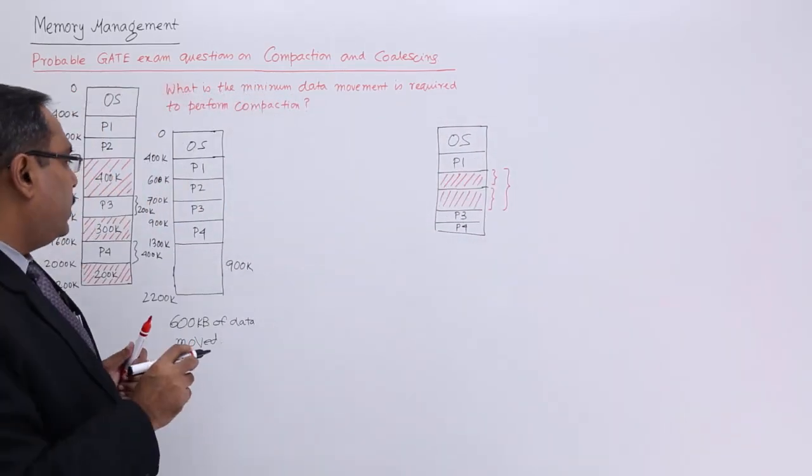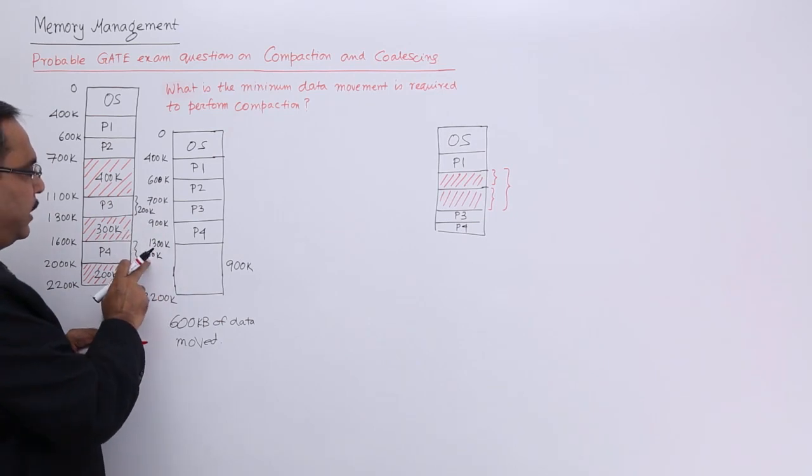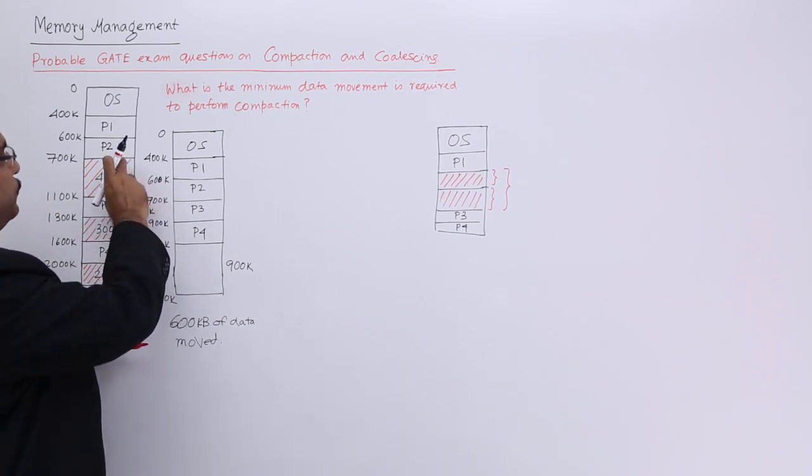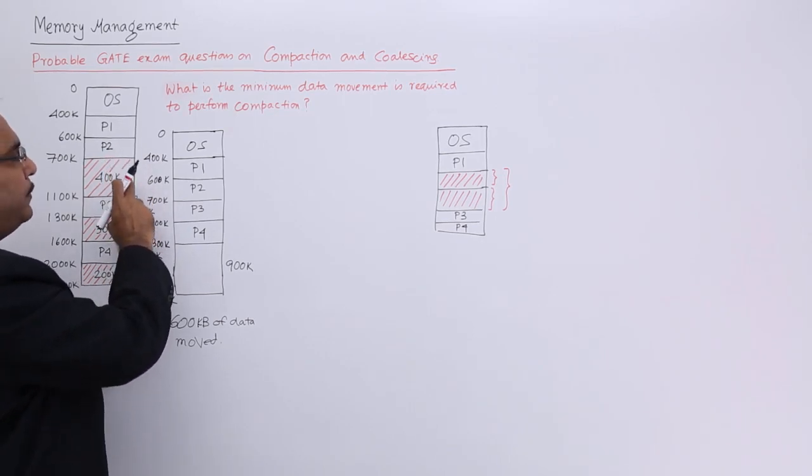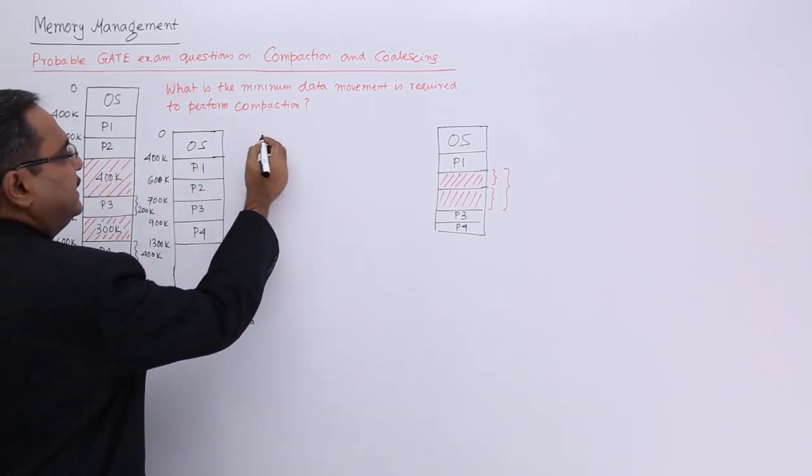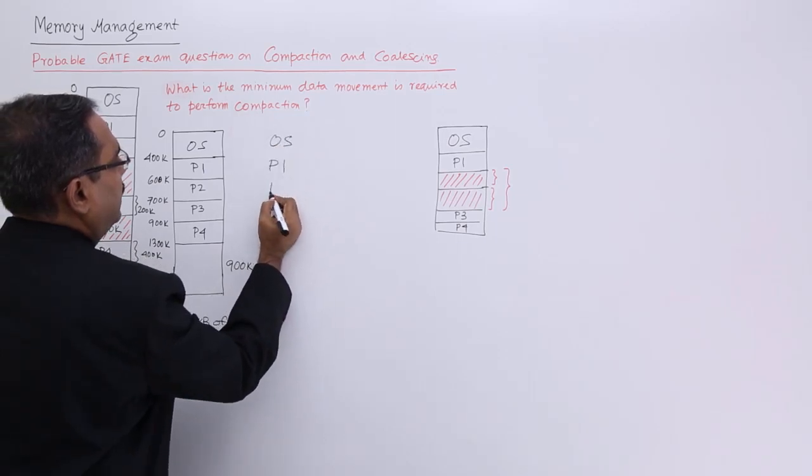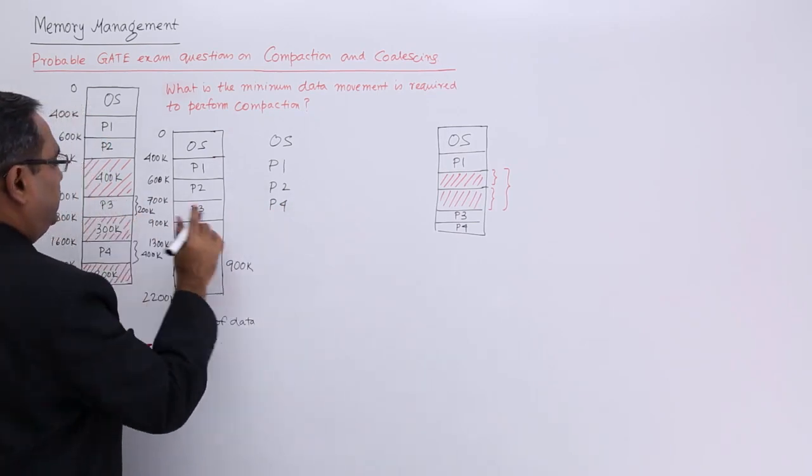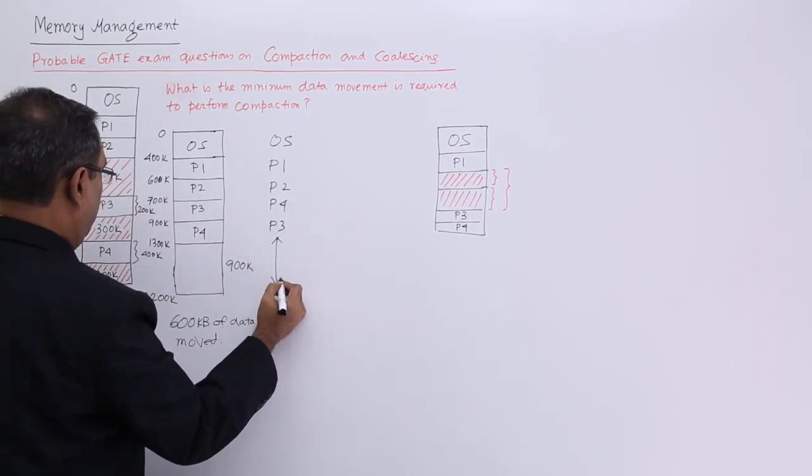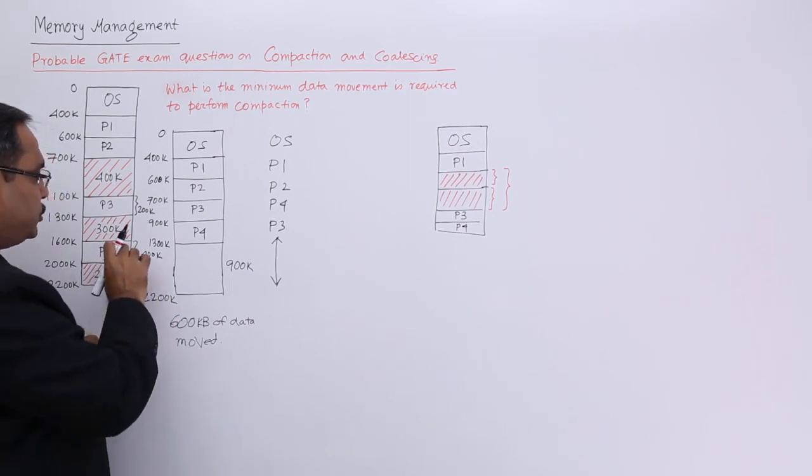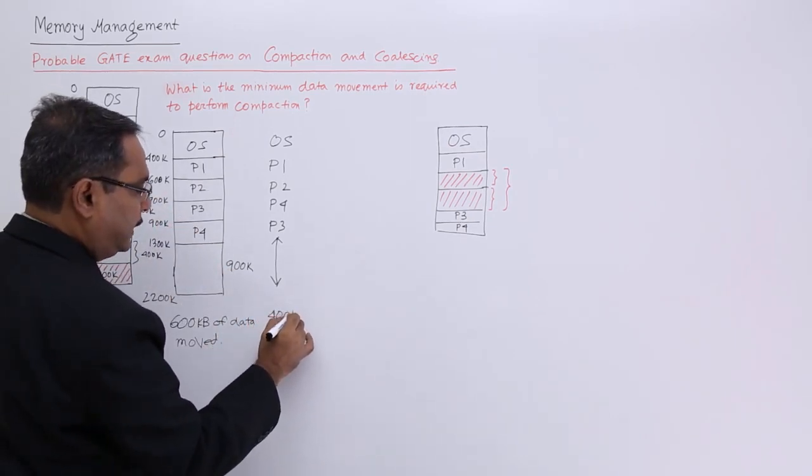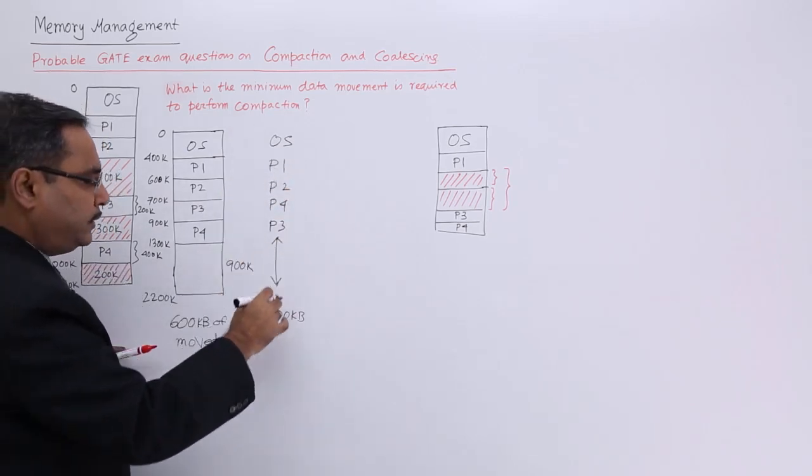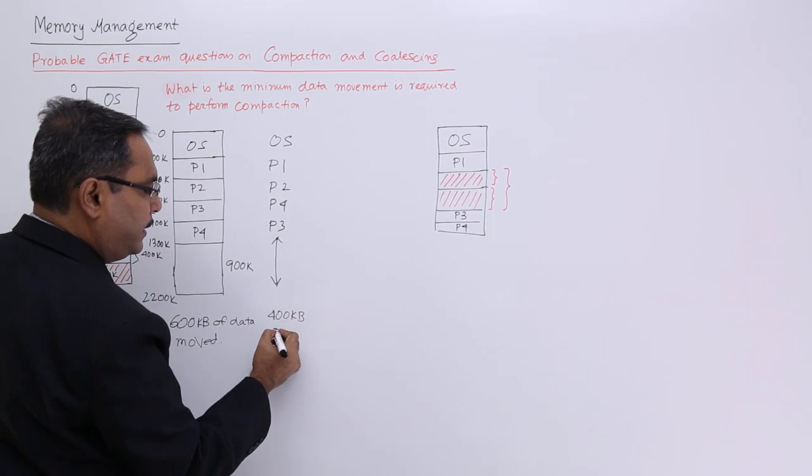In case of strategy number 2, what I shall do, P4 is having the size of 400k, so I can put it here, I can put it directly. So, P4 can be put on this 400k space, so it will become compact. So, what will be the sequence then? We will be having OS, then P1, then P2, then P4 will be coming, then P3 will be coming and then there will be a contiguous free space. So, how much of data you are moving, 400 KB. I think you can draw the diagram yourself. So, 400 KB moved.